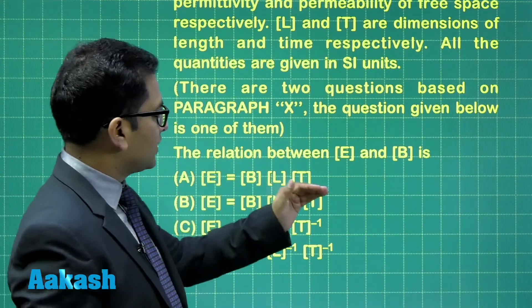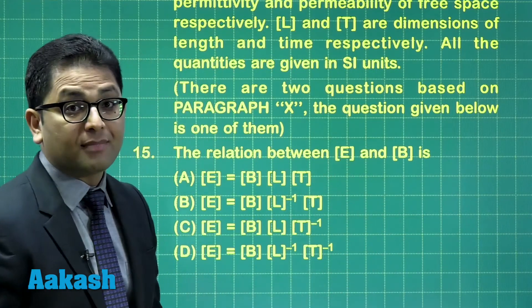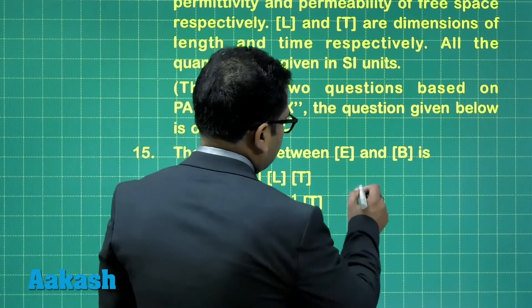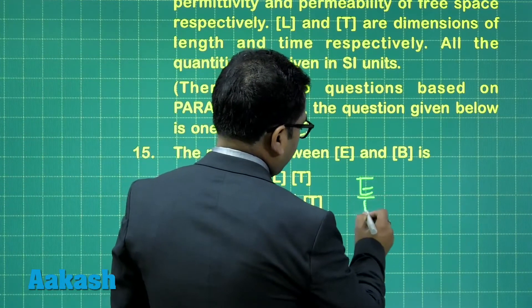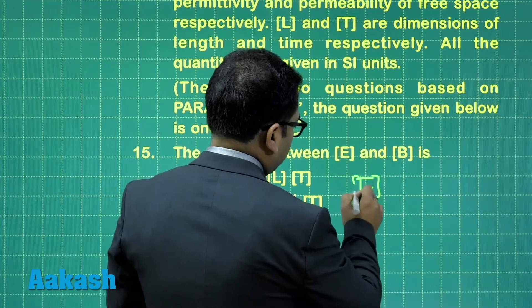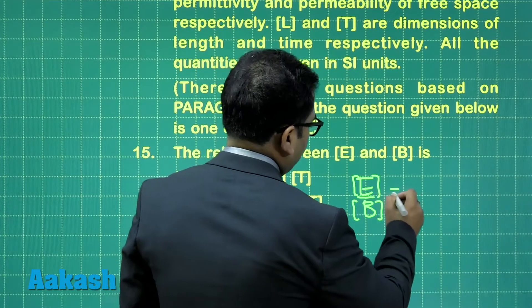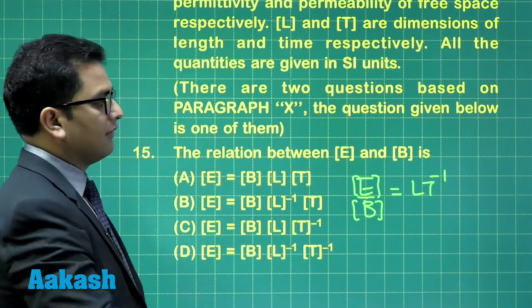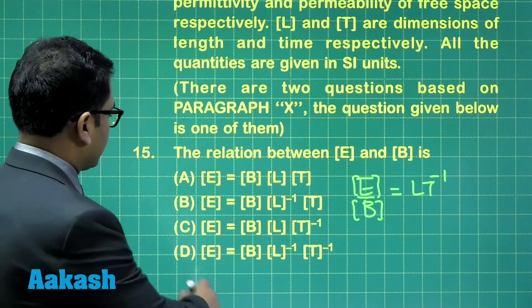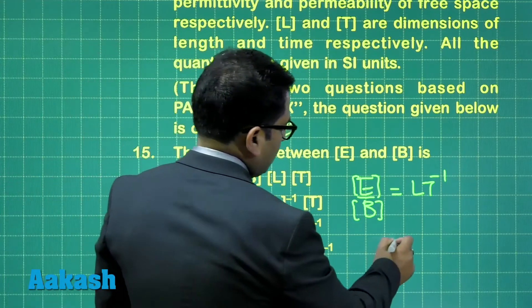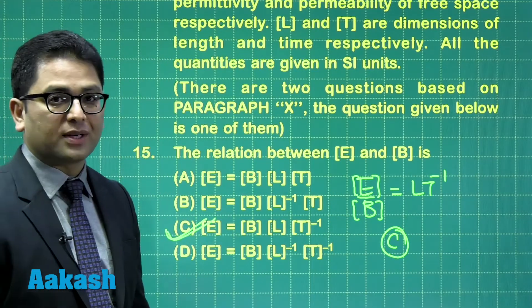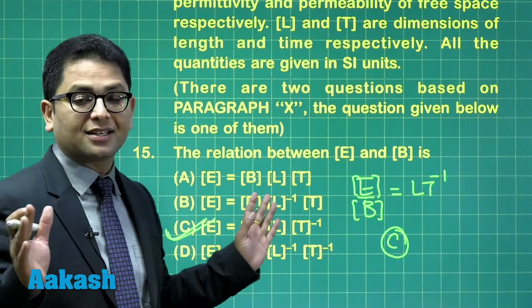The relation between dimension of electric field and dimension of magnetic field. That's a very basic question. The dimension of electric field divided by the dimension of magnetic field is Lt^(-1). E upon B is the velocity. So quite obviously, option number C has to be the correct one. So for question number 15, option C is the right one. A very basic and standard question.